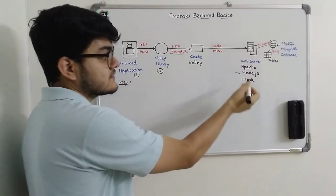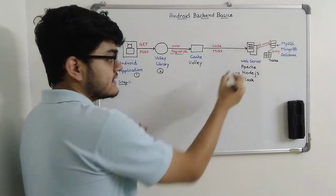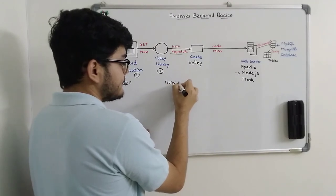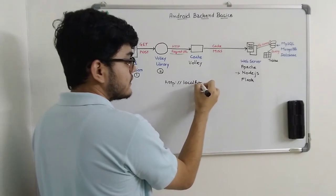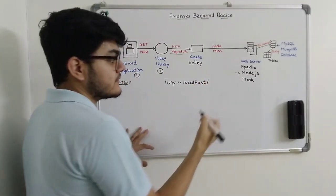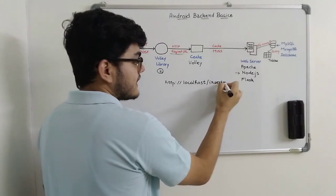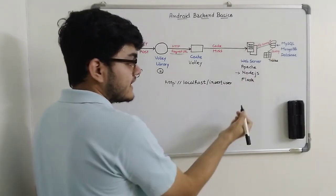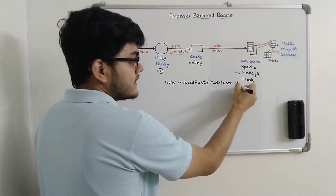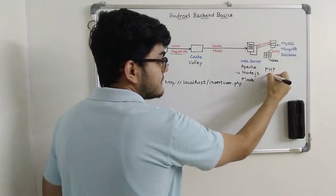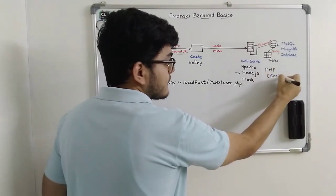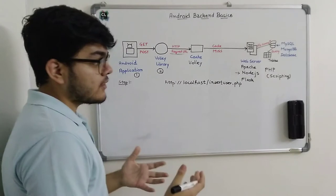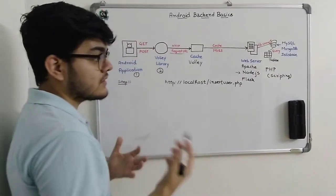It does not matter what server or implementation you are using — you are just going to forward the request to the server via a URL. For example, let's say we create a URL which is HTTP on localhost, and we create a file which will be an insert-user file to insert user details in the tables. In this series, I am going to use PHP as a backend scripting language. PHP is a server-side scripting language used to perform queries, connect to the database, and all that.